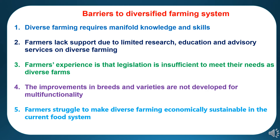The fifth barrier is that farmers struggle to make diverse farming economically sustainable in the current food system. Many farmers expressed difficulty in establishing a diverse and economically sound biodynamic farm. The use of several species, varieties and animals was more costly in terms of time and money than a specialized production. These are the factors working as barriers for farmers.